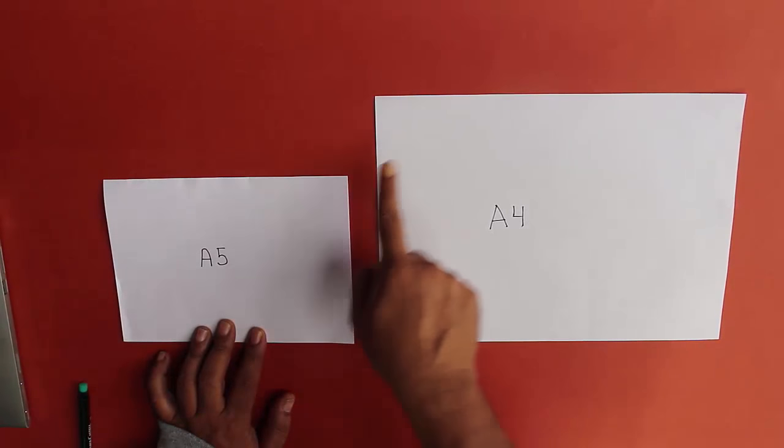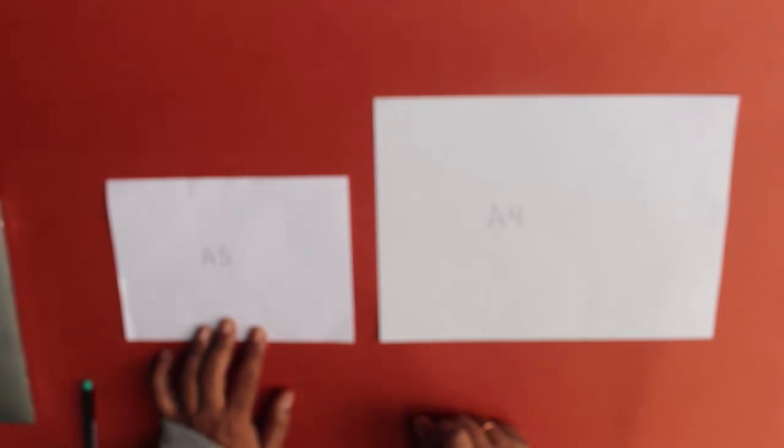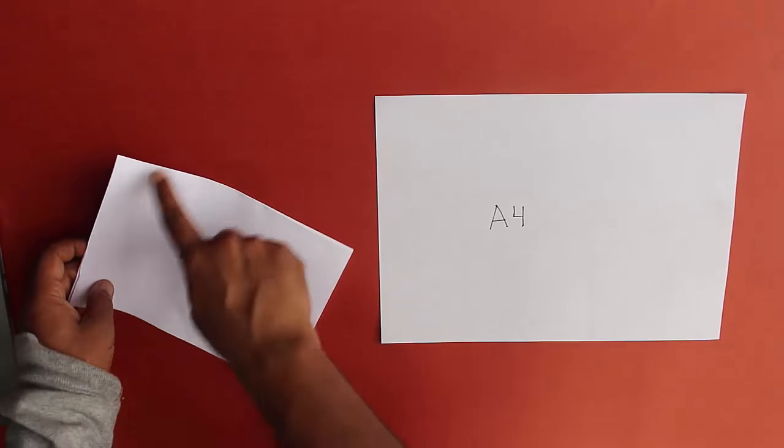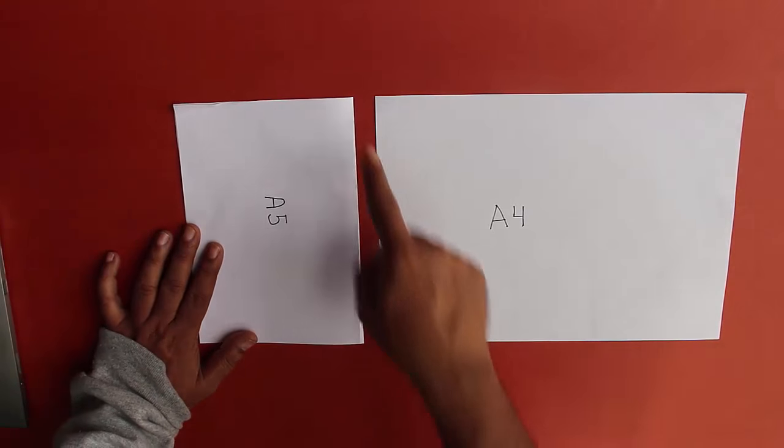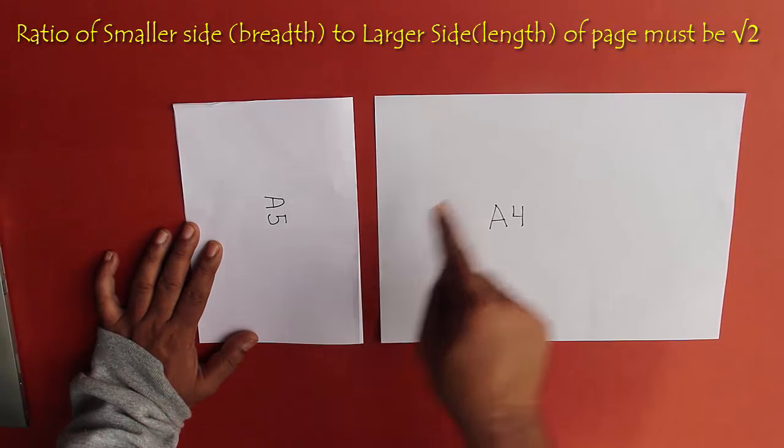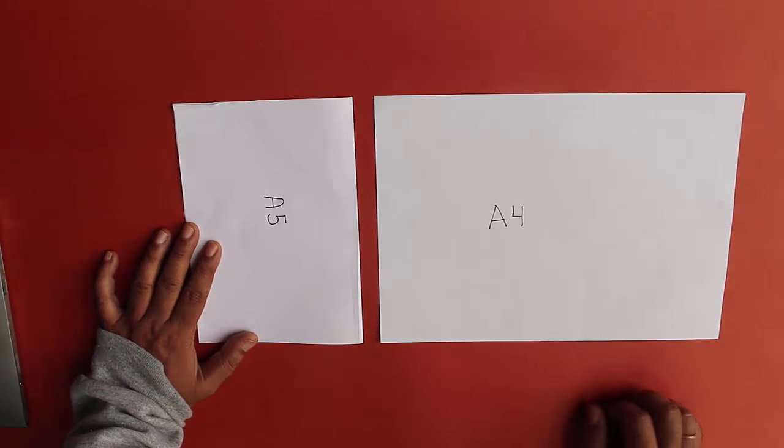ratio of larger side of A5 to the larger side of A4 must be in the ratio of root 2. And the larger side of A5 is actually the smaller side of A4. Therefore the ratio of smaller side to the larger side of A4 must also be root 2.